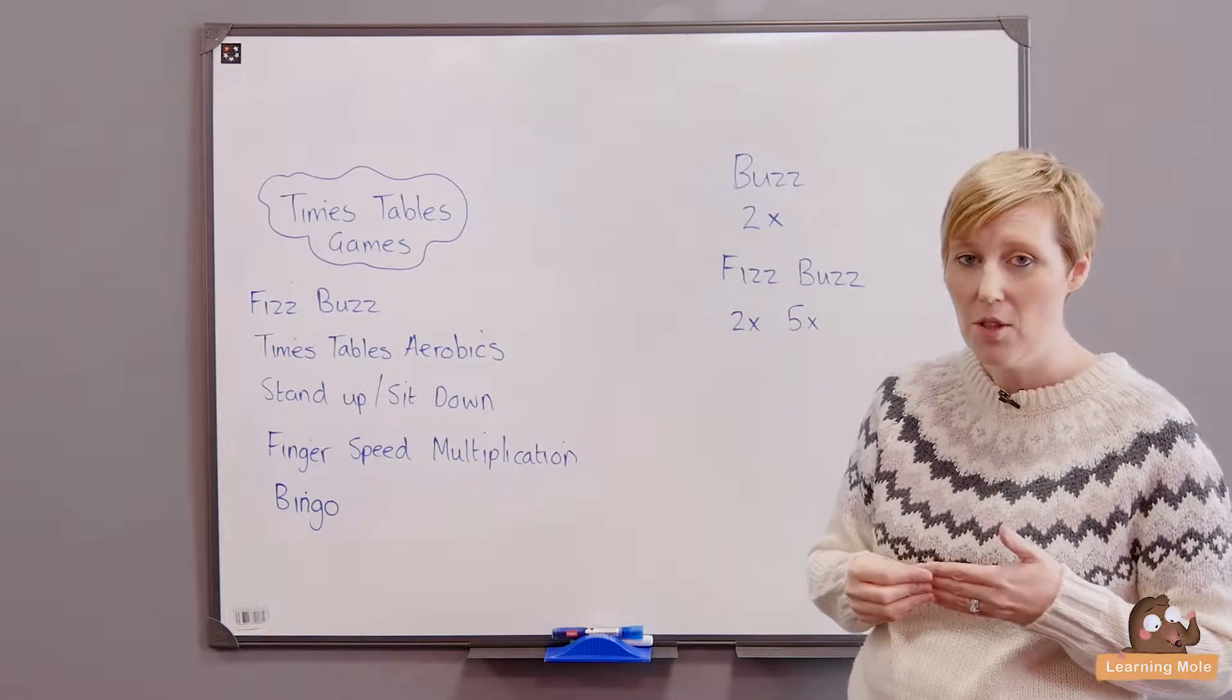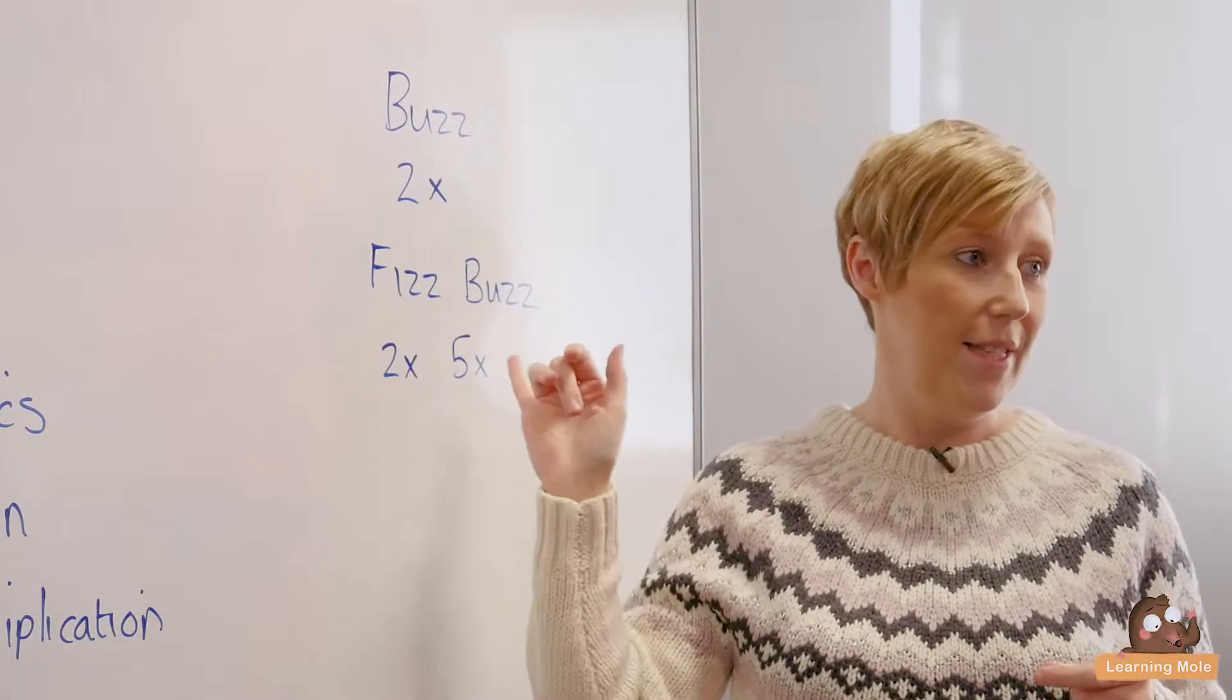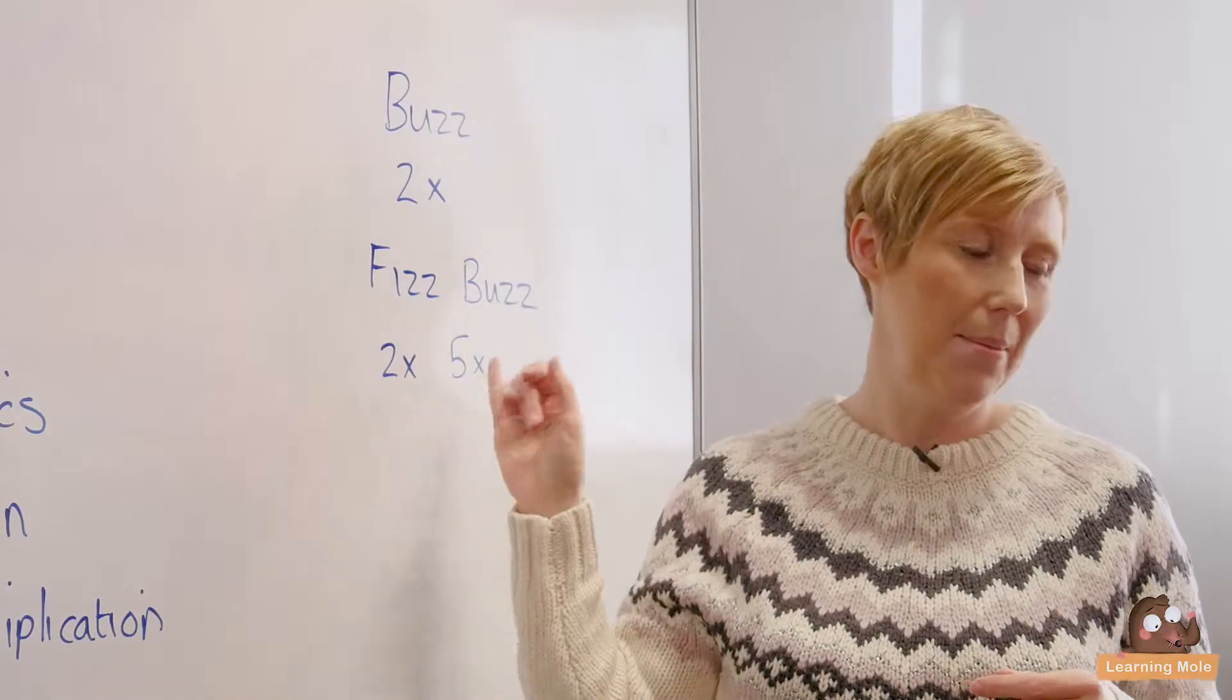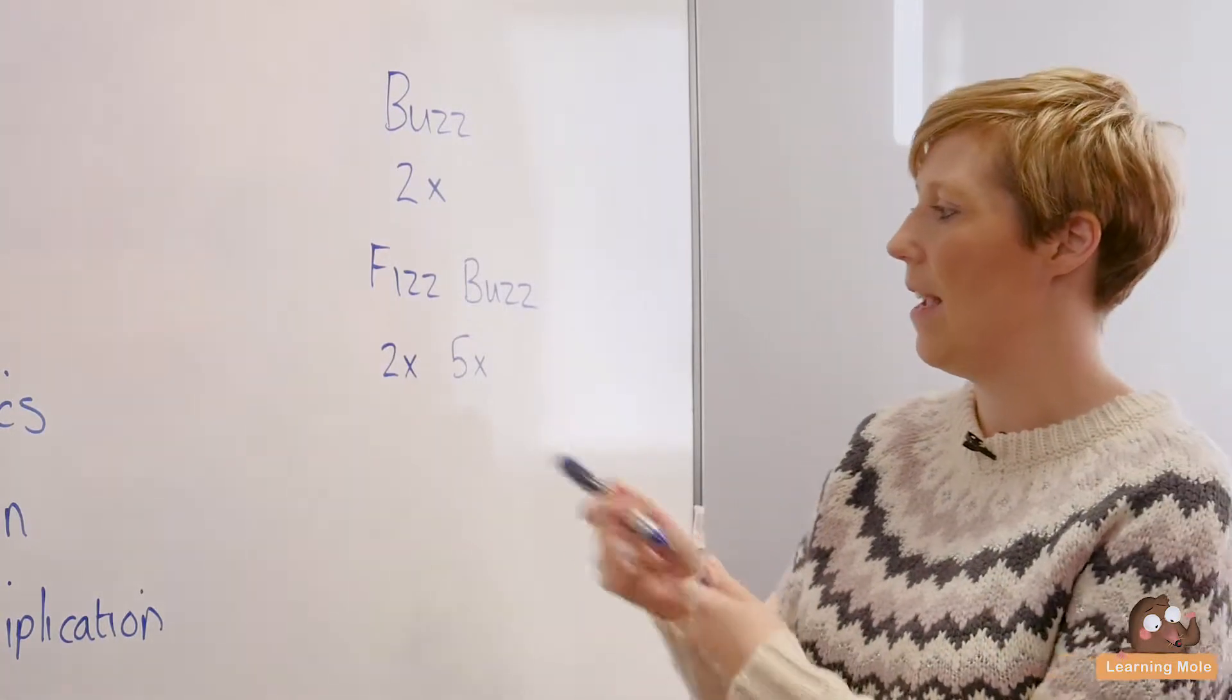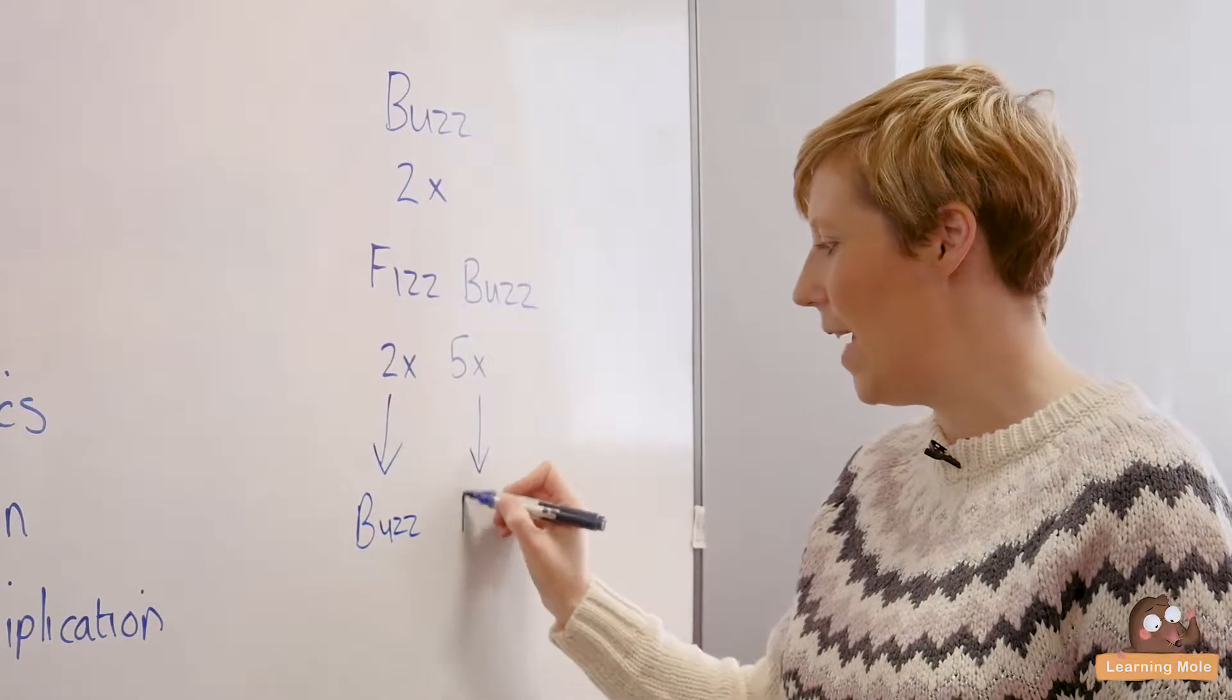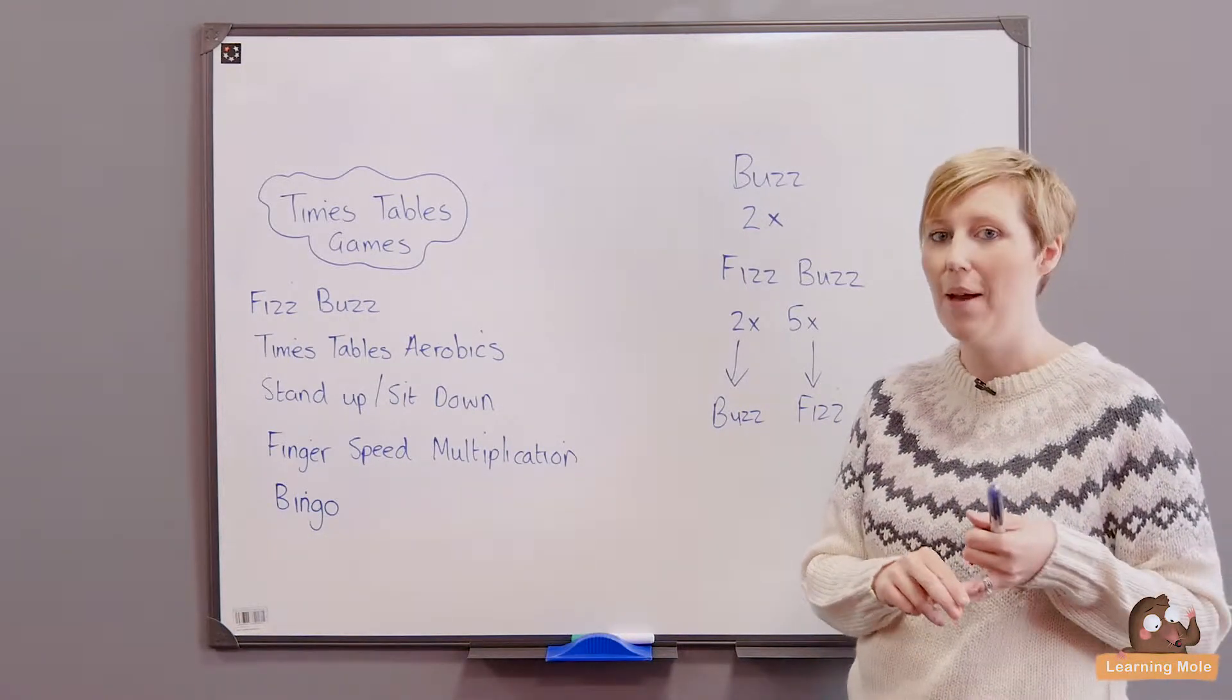Fizz Buzz is the more challenging element of it. So once you've established the rules and your children understand how to play you can introduce fizz as well, and basically you will introduce another times table. So this time I'm going to focus on the two times tables and the five times tables. You will tell your children to again establish rules: every multiple of two you need to say the word buzz, every multiple of five you need to say the word fizz, and every multiple that is in the two and the five tables must be fizz buzz.